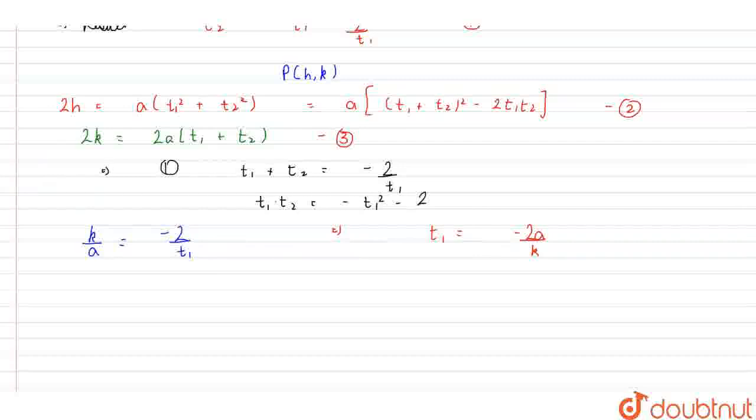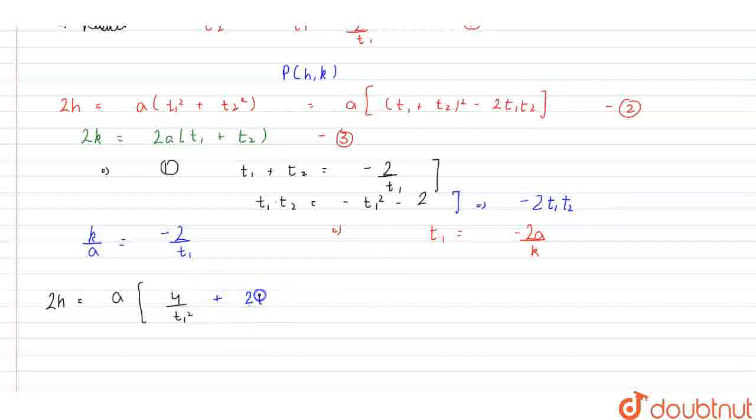Now, finally, using the second equation, that is 2h equals to a into t1 plus t2 whole square. Using this, it will become 4 upon t1 square, and from this equation minus 2 into t1t2 will become plus 2 into t1 square plus 4.